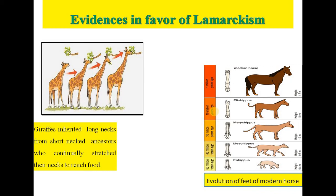The second example is evolution of the feet of the modern horse. They developed the power of fast running to protect themselves. Thus gradually, there was lengthening of limbs and the middle digit with the reduction of other digits in the horse. So the second evidence in favor of Lamarckism is the evolution of feet of the modern horse.